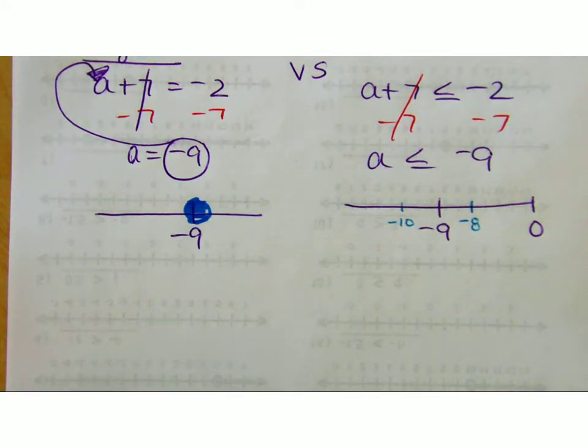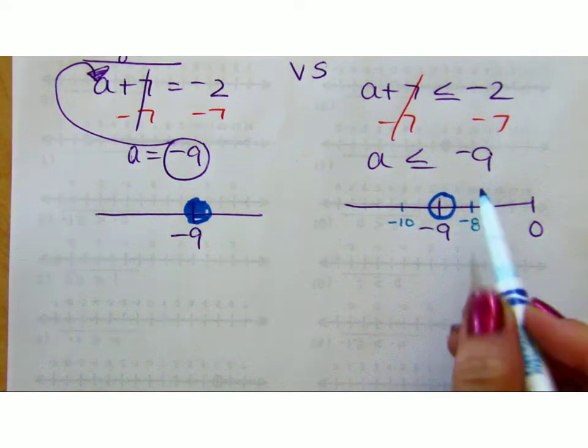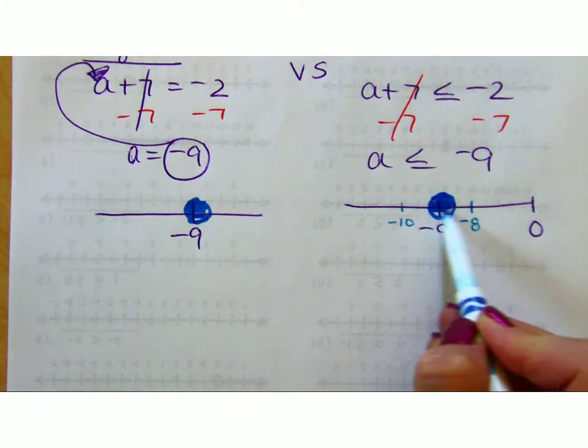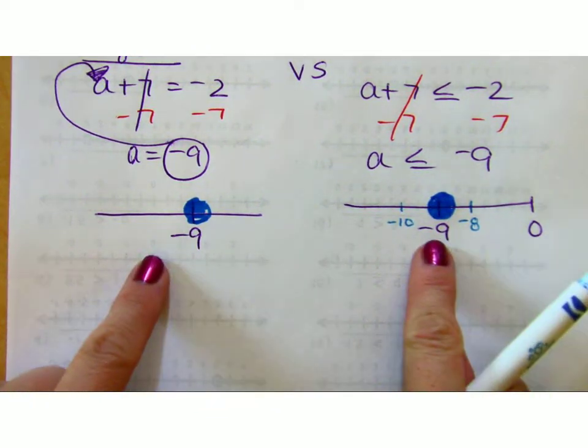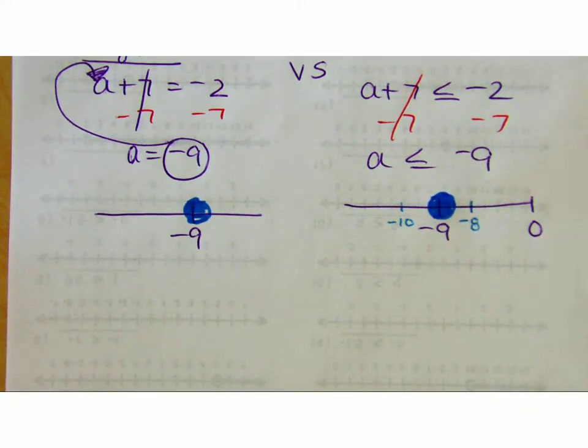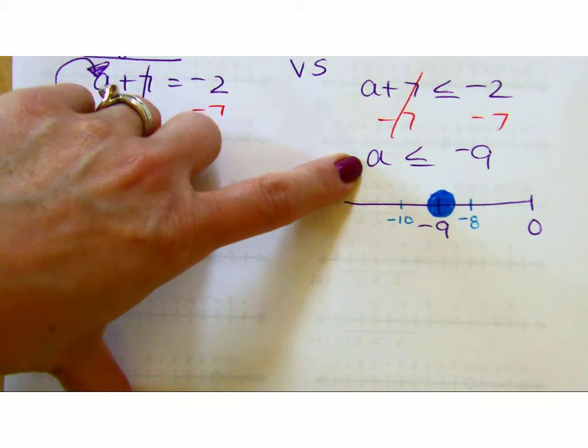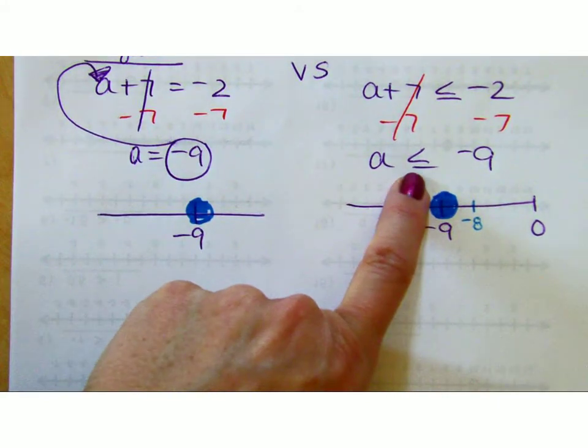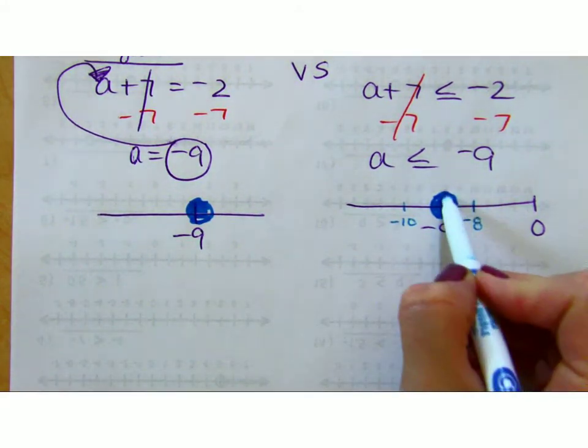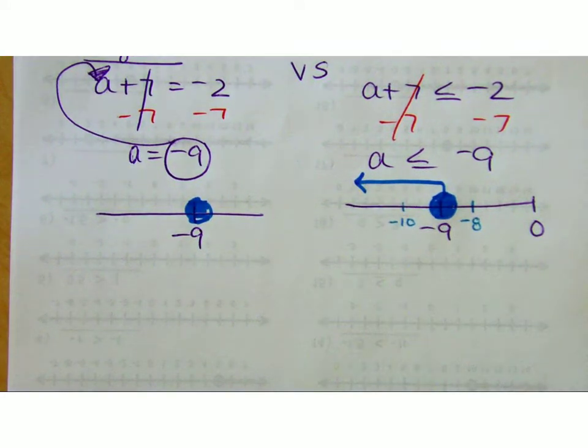I'm going to say it can be negative 9, so I'm going to color it in. And now they look the same, but they're not. I have to show where can it be less than. And as long as my variable is on the left, this tells you the direction to shade. So the numbers that are less than negative 9 are to the left.